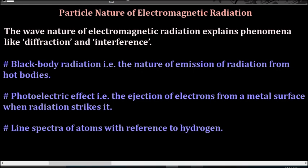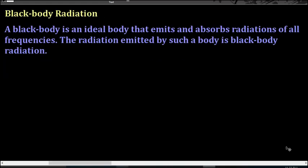And number three is the line spectra of atoms with reference to hydrogen. So let us first discuss the first phenomenon of the particle nature of electromagnetic radiation, that is the black body radiation. Before going into the detailed explanation, we must know what a black body is. A black body is an ideal body that emits and absorbs radiation of all frequencies.